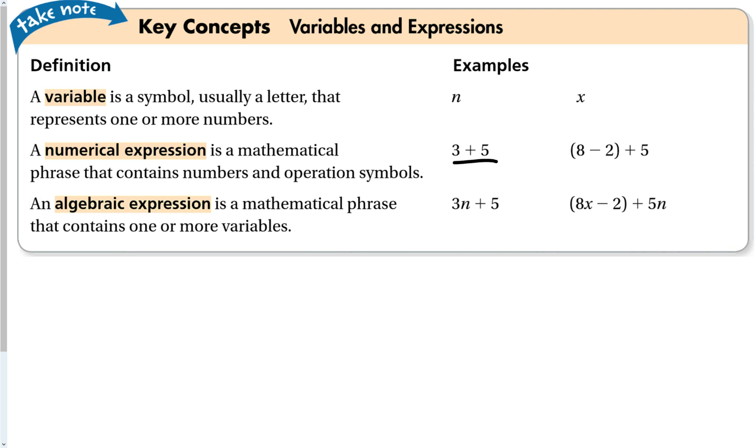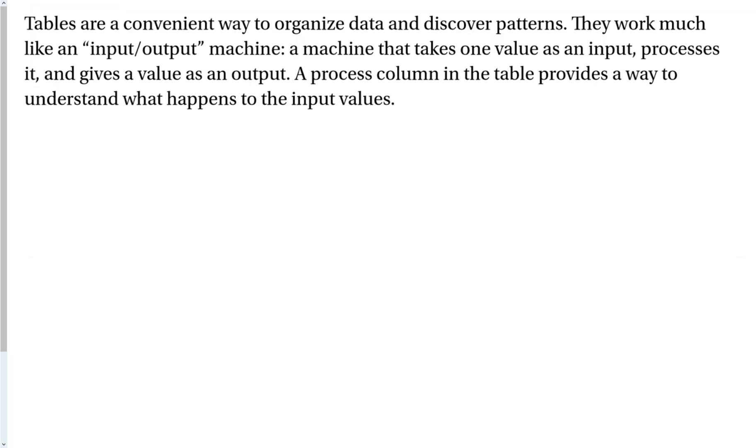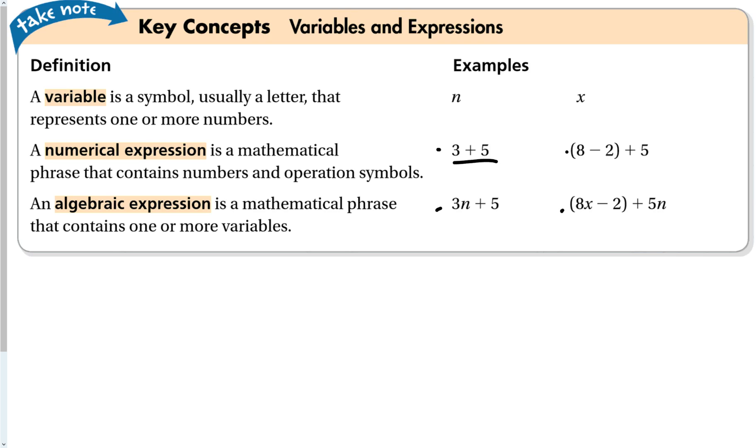So some key definitions here. A variable is a symbol, usually a letter, sometimes n. Most of the time we're going to use x, that represents one number or a few different numbers, depending on the number of variables that we're using. Numerical expressions are when we have a mathematical phrase that contains only numbers and operators, addition, subtraction, multiplication, division. Algebraic expressions contain numbers and variables. So this would be a numerical expression. These two would be algebraic expressions.